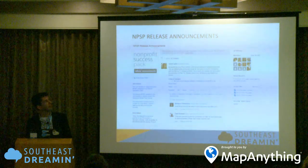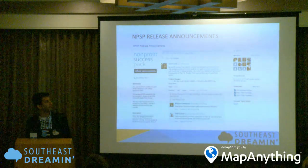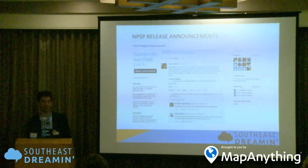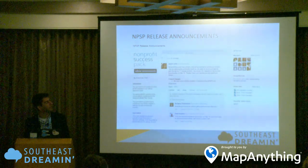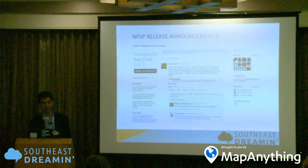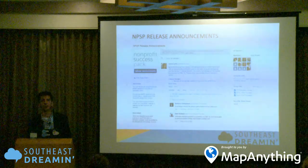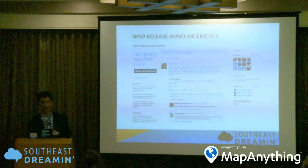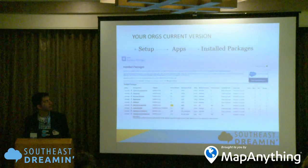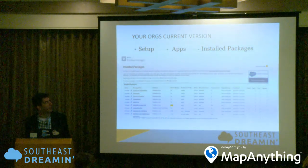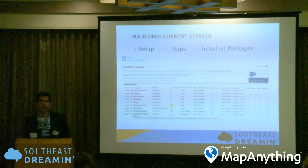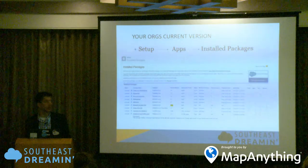The announcements will say what version number is being pushed. To check if your org is staying on top of that, you can go to Setup, Apps, and Installed Packages, and look for the Nonprofit Success Pack app — it will tell you what version number you're on. 99 times out of 100 it will match what the group says, but push releases can occasionally fail.